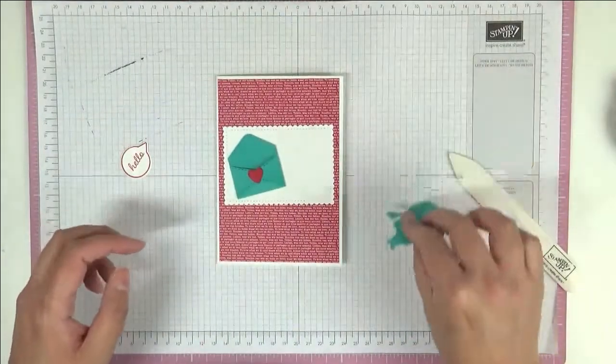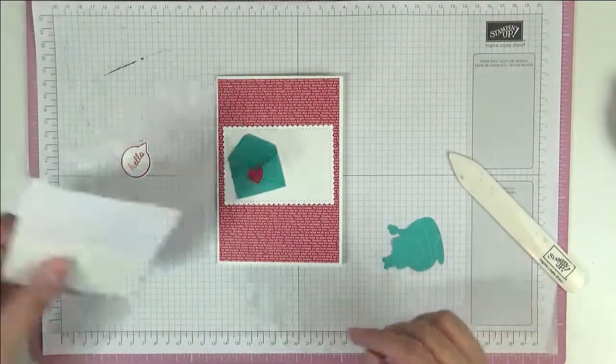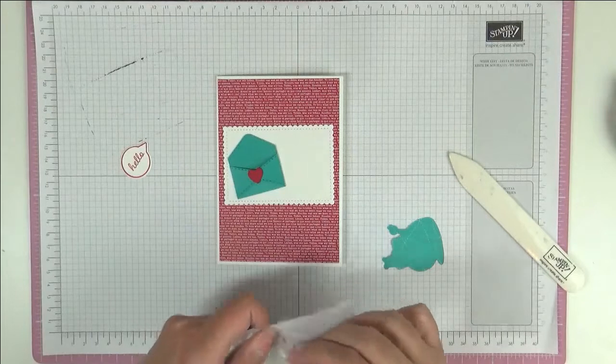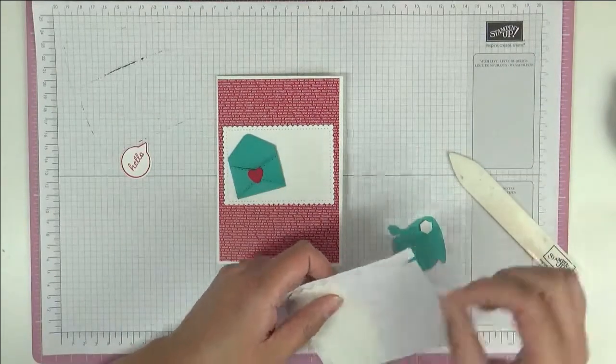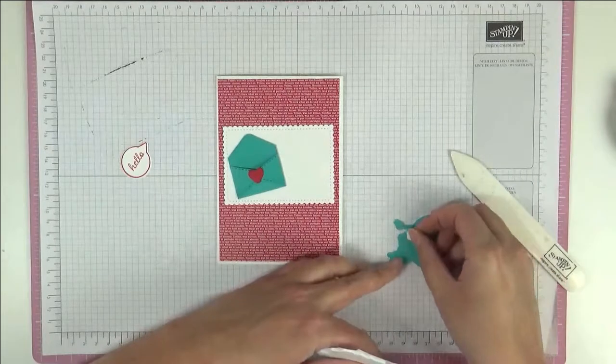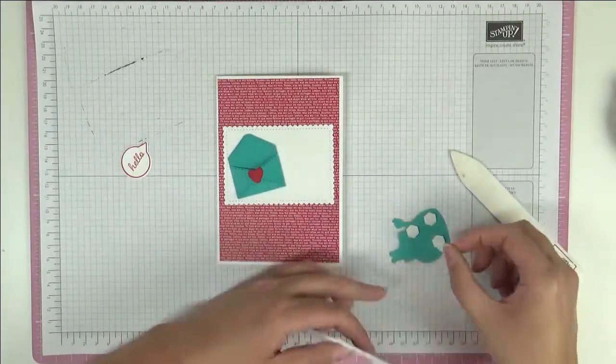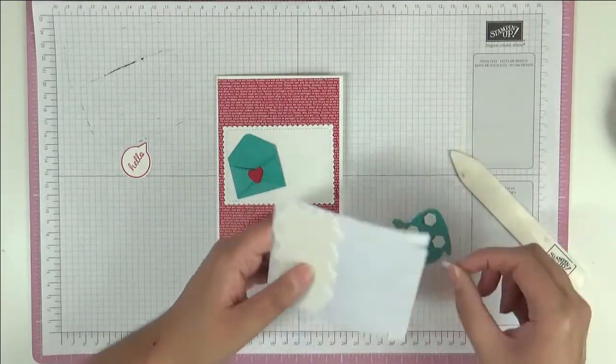Like that. Now these two we're going to pop up on dimensionals so let's do that. I actually love the other side of this paper as well, this Bermuda Bay, because Bermuda Bay is one of my favorite favorite colours.